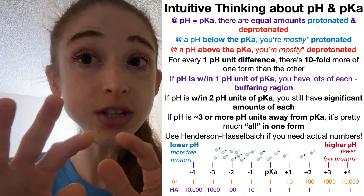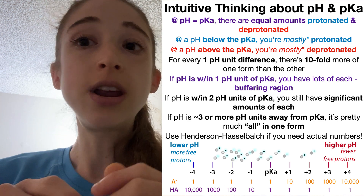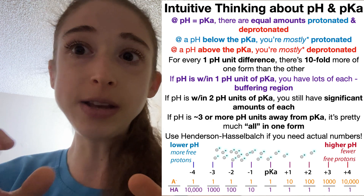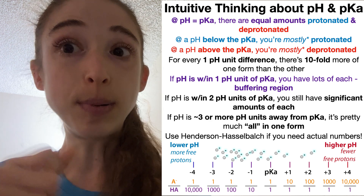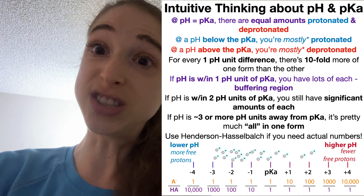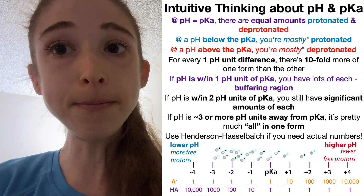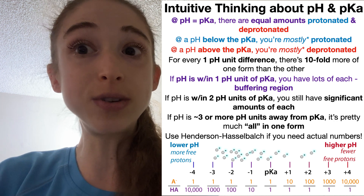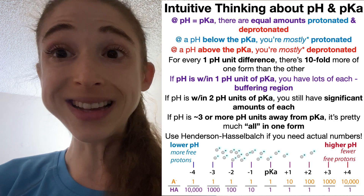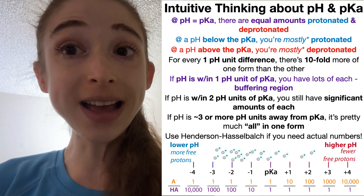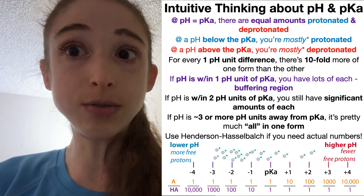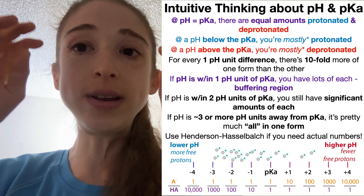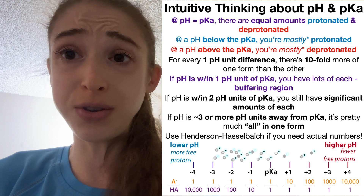Whenever you see something and it gives you a pKa, look at the pKa and look at the pH. If no pH is given, think about what would happen in your body at around pH 7.4 — that's typically what we're dealing with. If a pKa is below that, you need lower conditions for it to be protonated, so you're typically above the pKa and mostly in the deprotonated form. If something has a higher pKa than the pH you're at, you're below its pKa, there are more protons around, and it's going to be mostly in the protonated form.